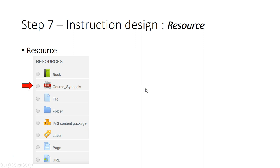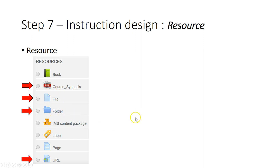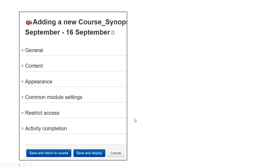We choose the simplest ones: course synopsis, file, folder, and URL. These four items will help you to link your resources or allow you to upload your resources into Smart UMS. When you click on each of these and then click Add, you will see a page for each resource where customization needs to be done. You don't have to do everything — there are a few important ones.